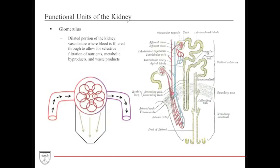The functional units of the kidney involve physiology closely, but here we'll cover the highlights. As blood enters the renal vasculature, it enters the glomerulus — a dilated portion of the renal vasculature with a selective filter composed of a fine basement membrane and podocytes. Substances that pass through become the ultrafiltrate, including metabolic wastes, glucose, urea, and creatinine. Things too large to filter — like red blood cells and albumin — continue through the vasculature; if they do filter through, it's usually pathologic.